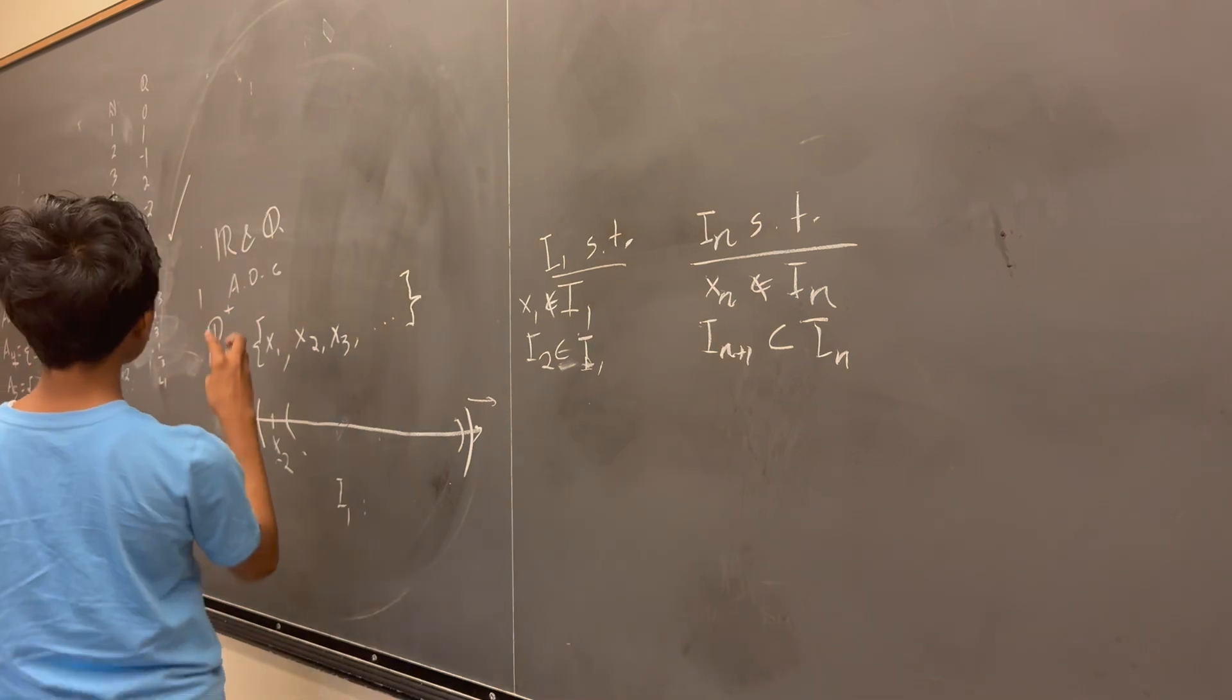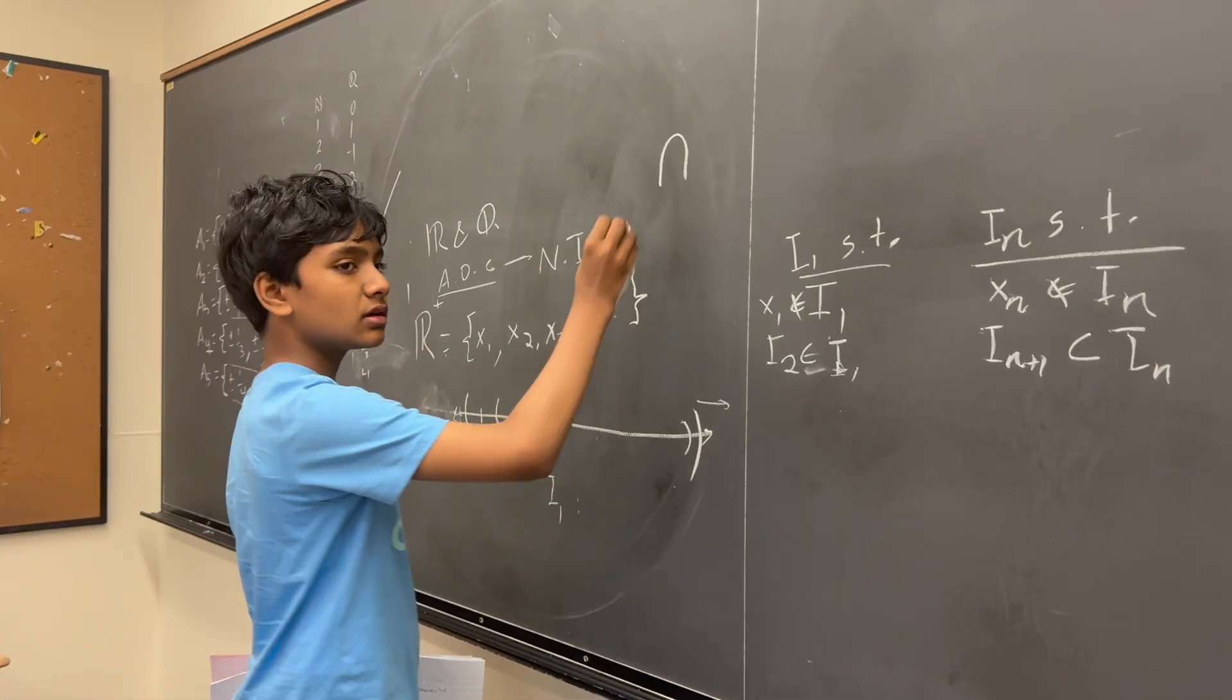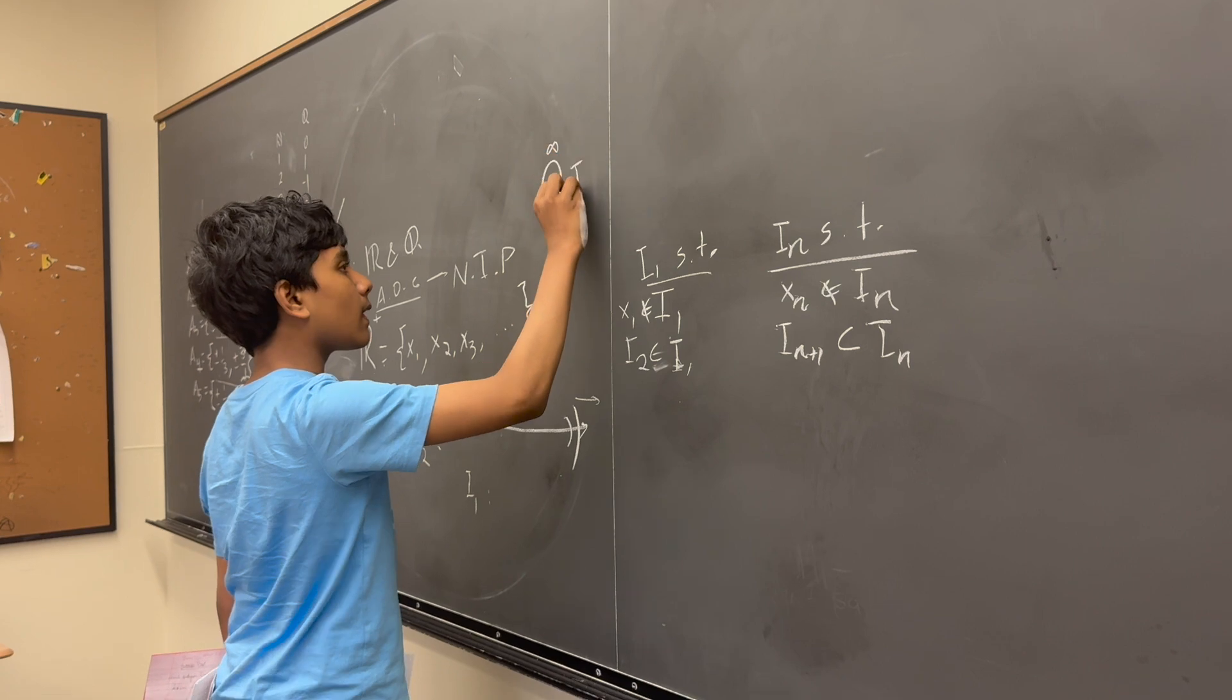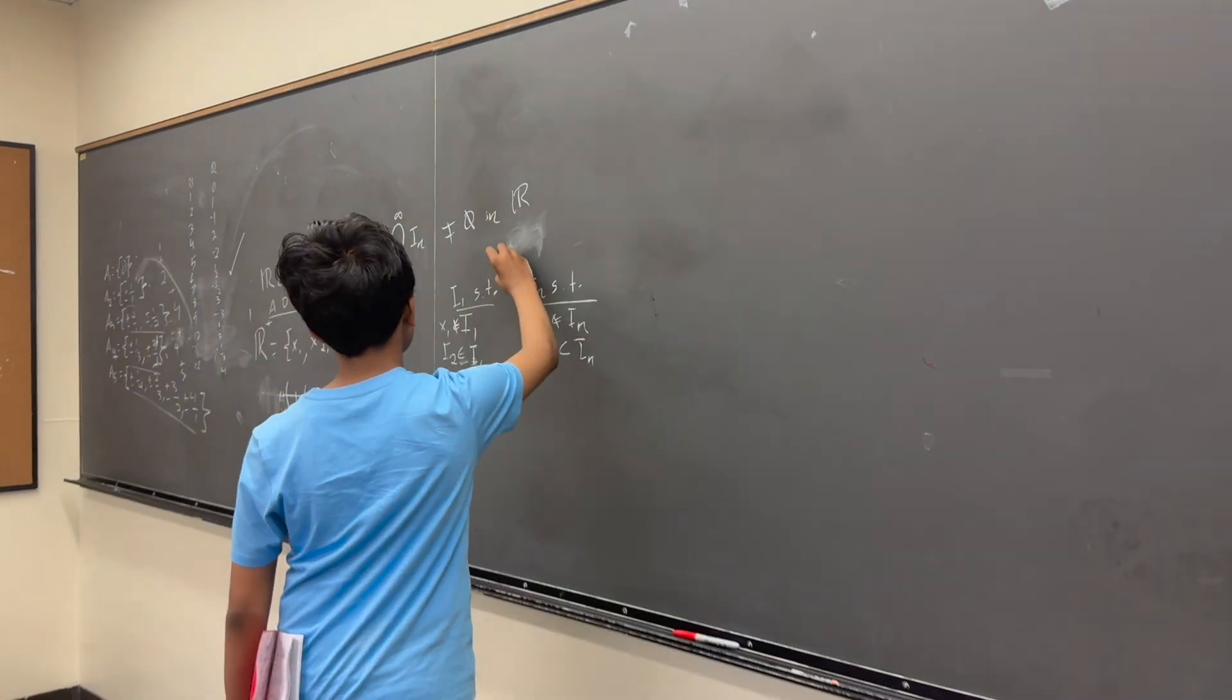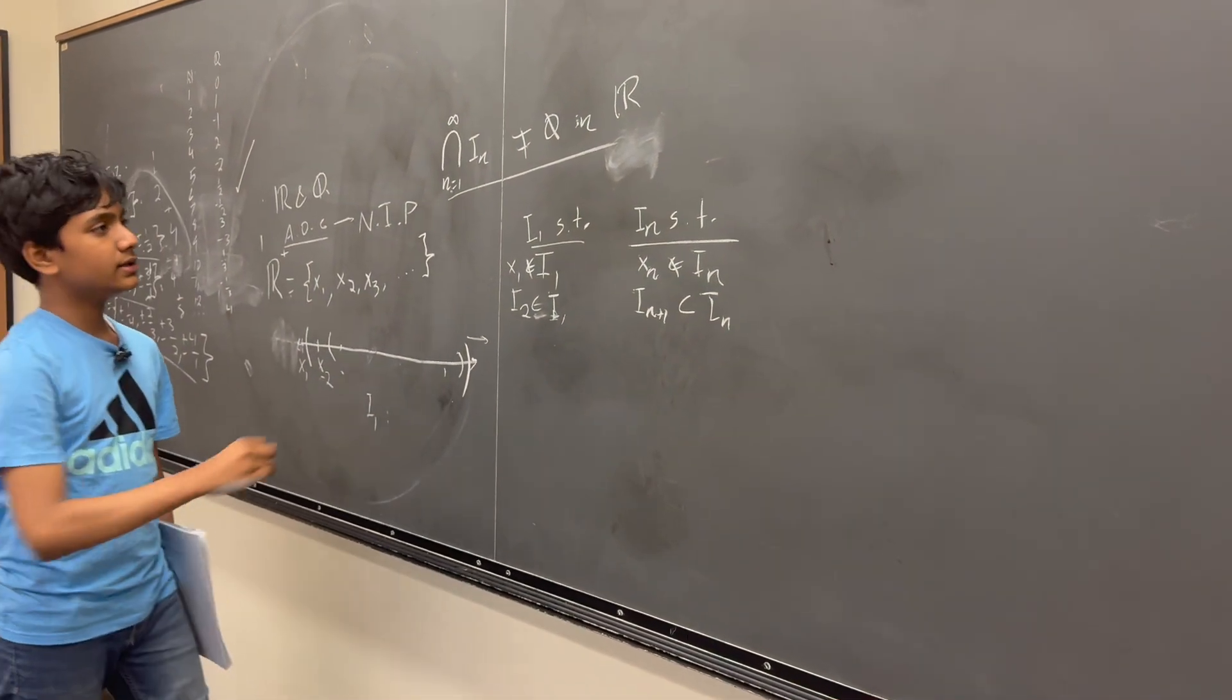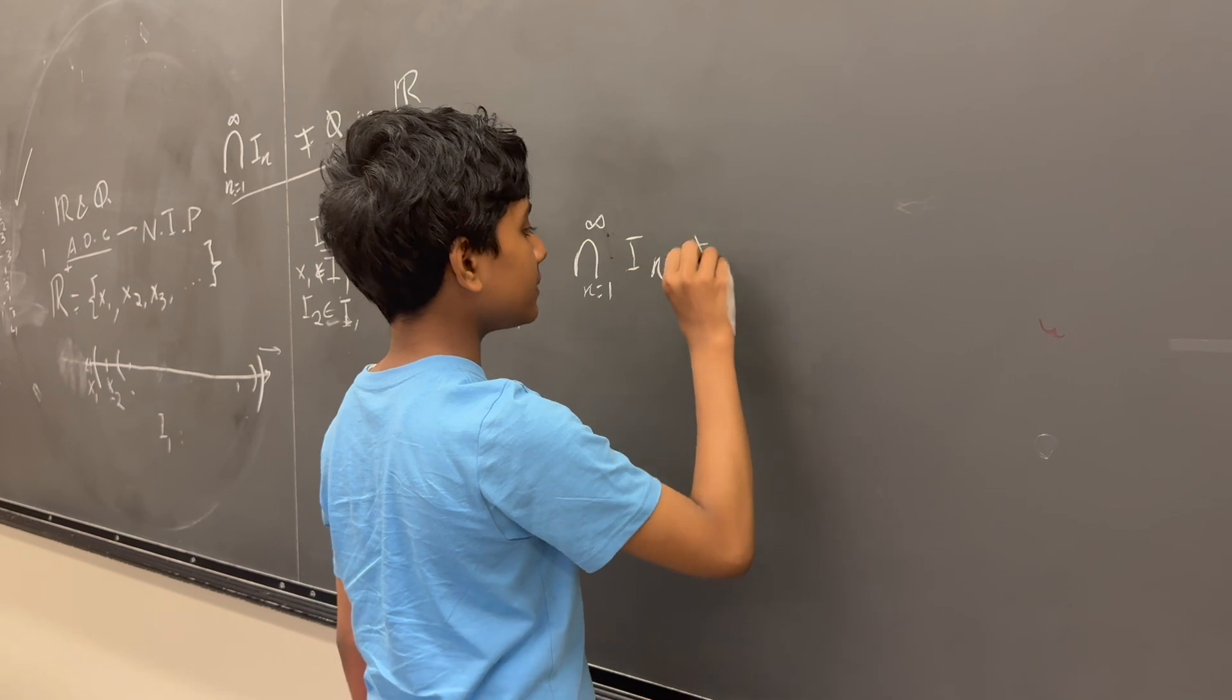A core area of the axiom of completeness that we covered last time was the nested interval property, or NIP, stating that the intersection of infinitely many infinite sets, or even infinitely many finite sets, such that each of them are a subset of another one, is never going to be equal to the empty set in the real numbers. With this property, we can say that, while the intersection of these cannot be null, it has to have something inside of it. The intersection, from N equals 1 to infinity, of In can't be null, right?